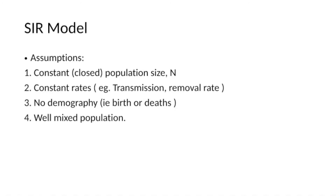The SIR model works on a few assumptions: the total population size is constant; there is a constant rate of transmission; there is no demography — meaning no addition of new cases by birth or migration, and no deletion by deaths. Critically, it assumes a well-mixed population, where every infected individual has an equal chance of meeting a susceptible individual.